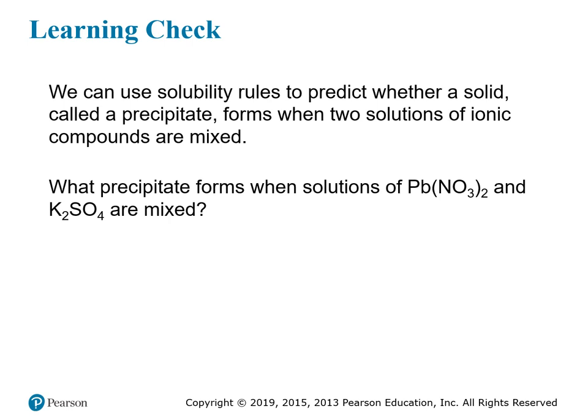The fact that some ion combinations form insoluble compounds explains why certain precipitation reactions — double replacement reactions — occur. For instance: what precipitate forms when solutions of lead nitrate and potassium sulfate are mixed? Both compounds form soluble solutions: lead nitrate has nitrate ions and potassium sulfate has potassium ions, both always soluble. When mixed together, though, you might get a new combination that becomes insoluble — forming a precipitate that drives the reaction forward. Without forming an insoluble product, the ions would just remain jumbled together.